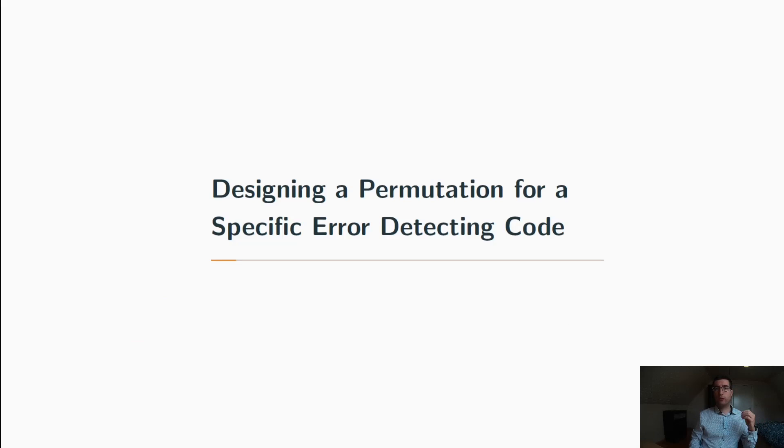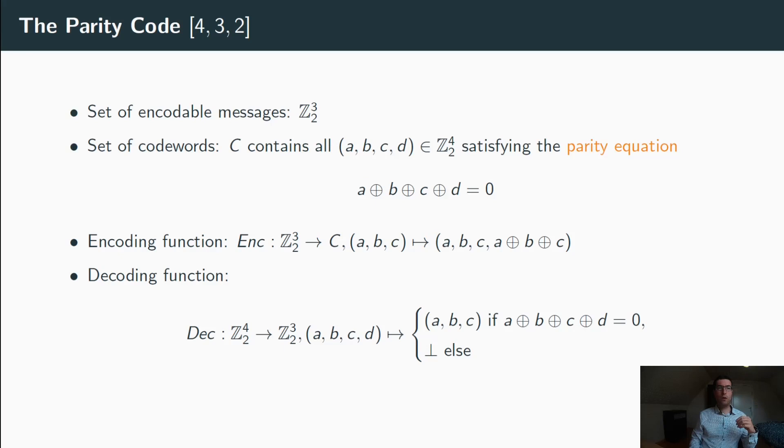In the first part of this presentation, we will talk about the generic strategy that we use to design a permutation for a specific error-detecting code. And in the second part, we will see together a concrete example for that with FRIT.